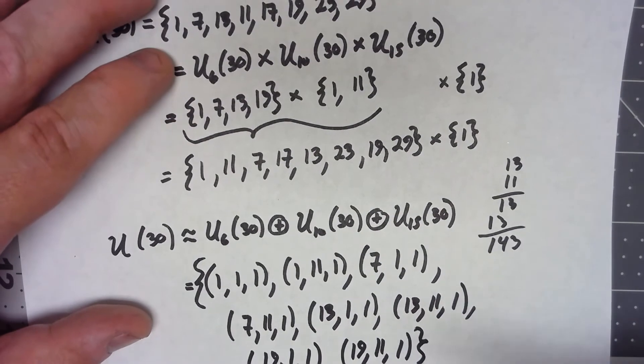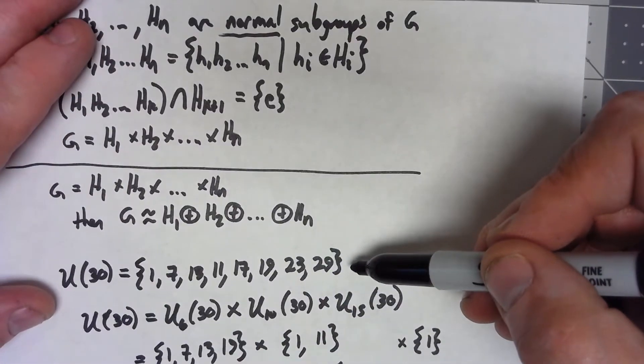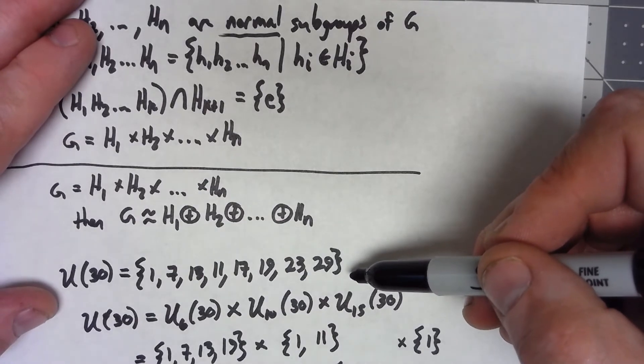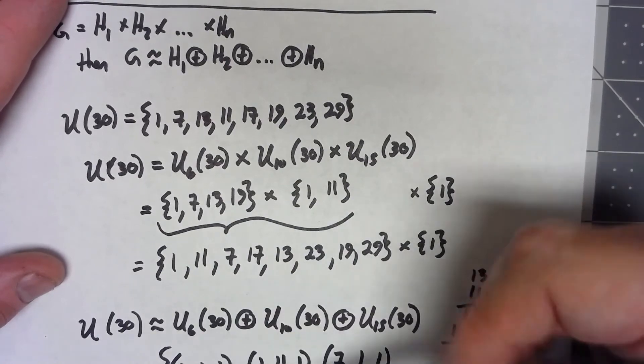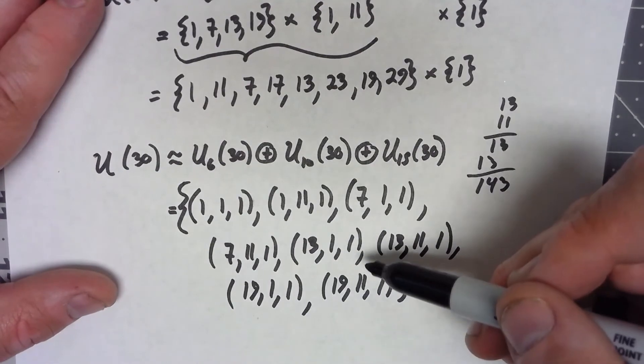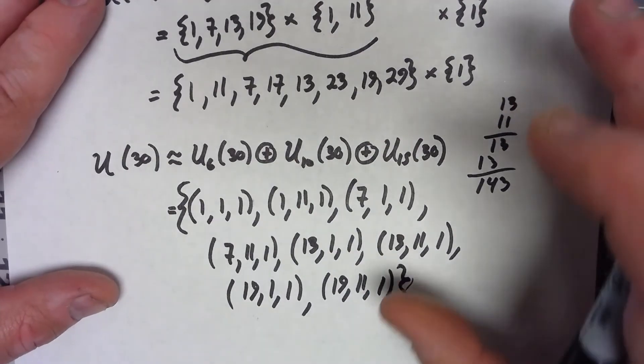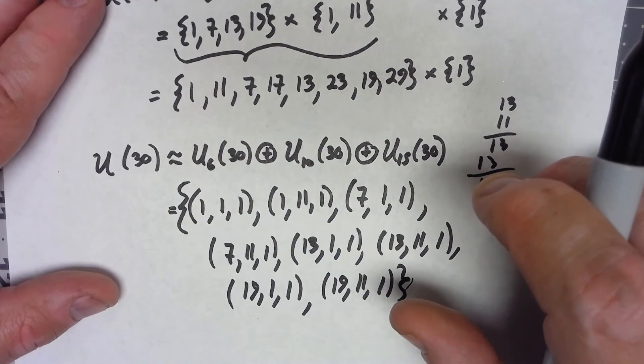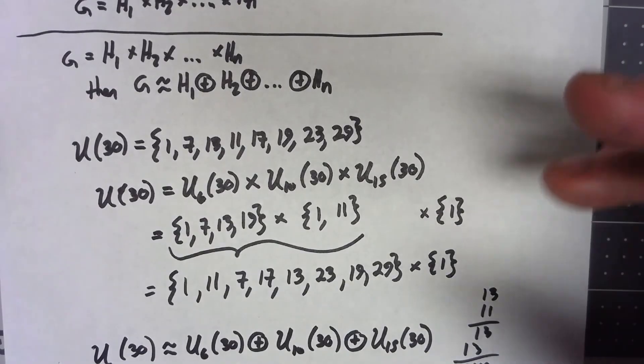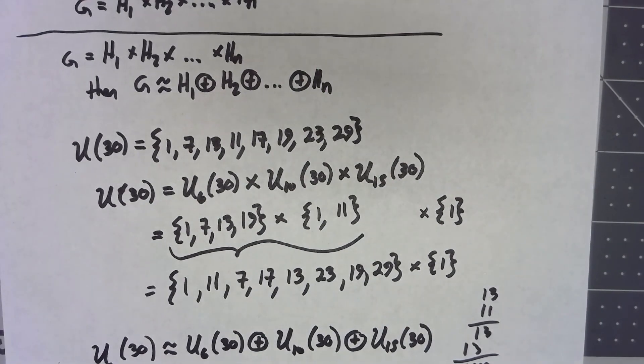Those eight elements correspond to the eight elements here. These two things, these two groups, U30 and this weird thing of triples, are going to be isomorphic to each other. Again, I'm not going to go through the whole proof of that, but the idea is the internal direct product, the external direct product, in some sense, in a real isomorphic sense, is the same thing.